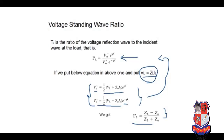We have already derived this in our propagation chapter. This reflection coefficient represents the reflection coefficient in terms of the parameters of the transmission line. Here Z0 is of course the characteristic impedance, and ZL is the load impedance of the transmission line.